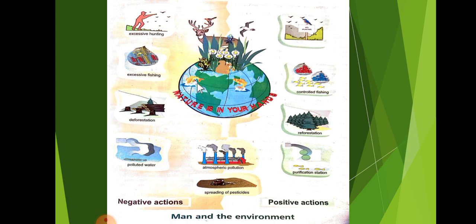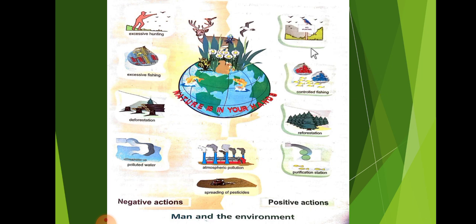So, how do man and the environment interact? Man's activities affect this environment — which contains animals, fauna and flora. The negative actions include: excessive hunting — المان عم بيستياد; excessive fishing — استياد السمك; deforestation — قطع الأشجار; and polluted water — المية الملوثة. All of these must be stopped — hunting birds and all such harmful activities.